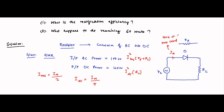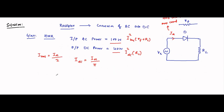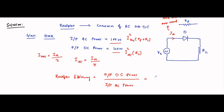Here there is no parameter given like the value of voltage or load resistance — we have been directly given that AC input is 100 watts and DC output is 40 watts. Rectifier efficiency is given by output DC power divided by input AC power. Putting in the values: 40 divided by 100 equals 0.4, which is 40 percent. This is the rectifier efficiency.